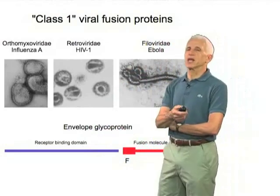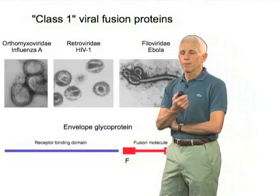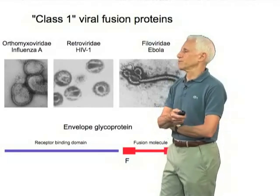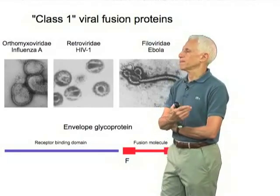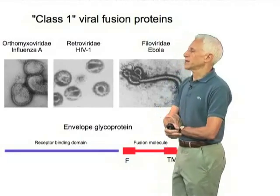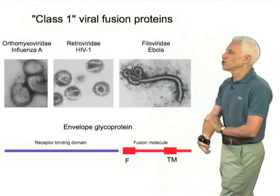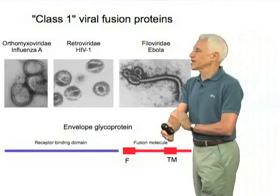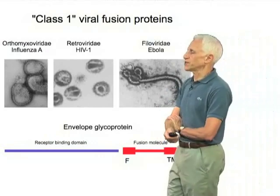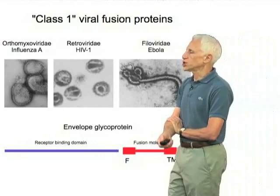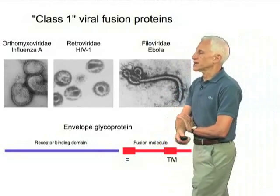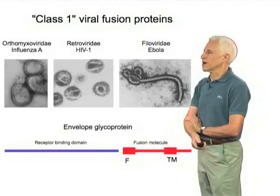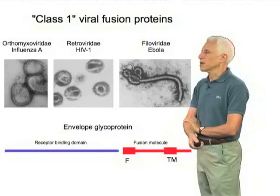Some viruses have proteins like this but have a separate receptor binding protein. And a fusion module, or the C-terminal half in general, which is anchored by a C-terminal transmembrane segment in the viral membrane.